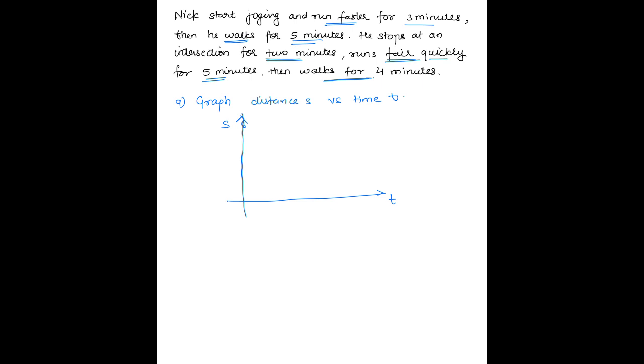For 3 minutes, he walks faster and faster, so he will accelerate. After 3 minutes, he walks for 5 minutes at constant speed. So we can have a straight line since speed is constant.